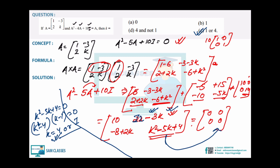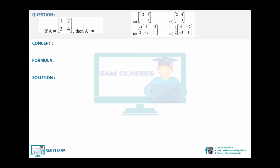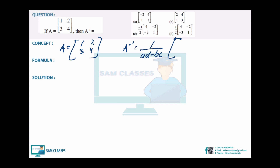Next question: another inverse question. A = [[1,2],[3,4]]. Using the direct formula: A⁻¹ = 1/(ad - bc) × [[d,-b],[-c,a]]. Interchange leading diagonal elements, multiply non-leading diagonal by -1.